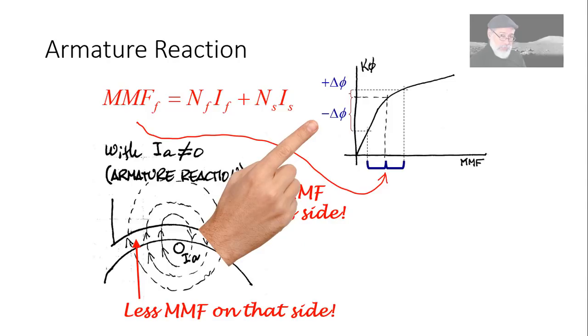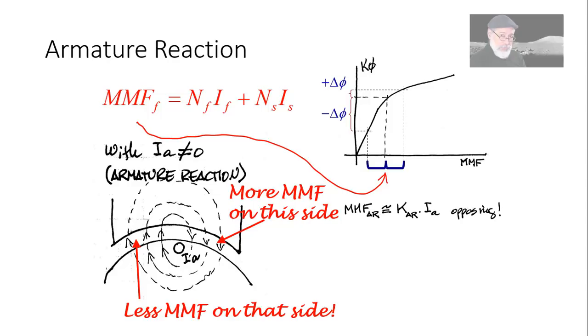The net effect is that the current in the armature will reduce the net flux in the air gap. It is as if we had a negative term added to the total MMF applied to the air gap. The effect of the current in the armature is included as a negative magnetic motive force proportional to the current in the armature.